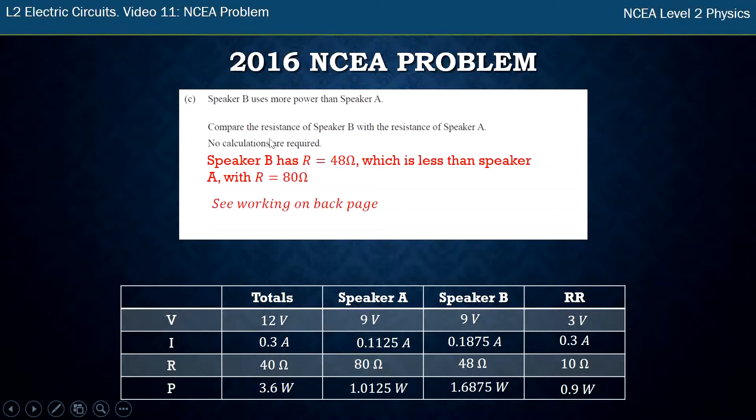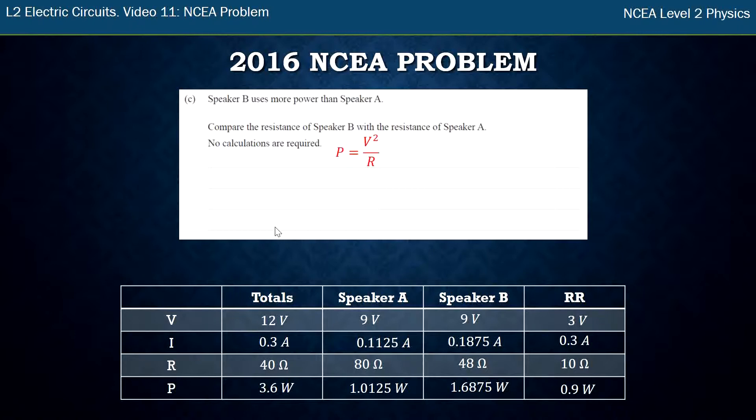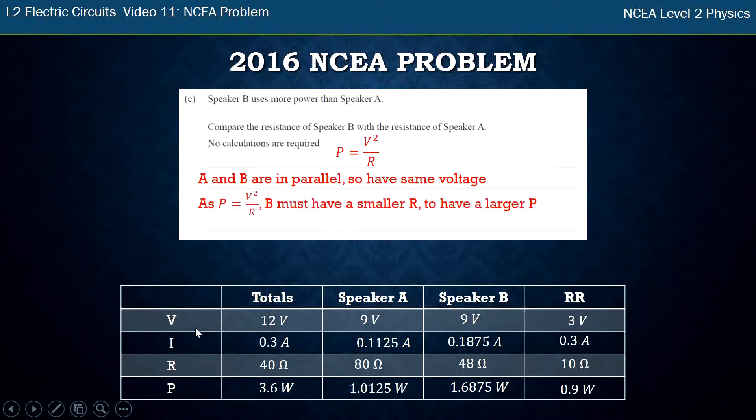Now even though it says no calculations are required I've obviously done a few calculations to get here. The other way you could do this if you weren't going to do all the calculations would be to write down your power formula. Not the VI but if you substitute in for I your V squared over R. A and B are in parallel so they have the same voltage. We can see that here. And therefore if one has a larger power because it's an inverse relationship we'll have a small resistance. So B has a smaller value of resistance to have that larger power.